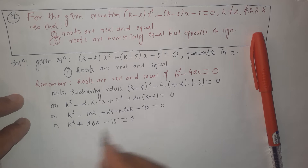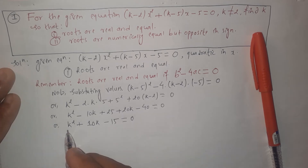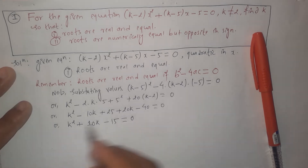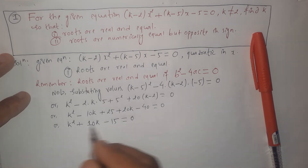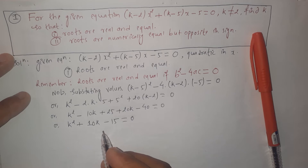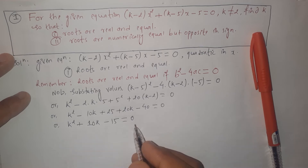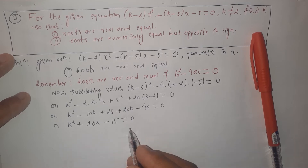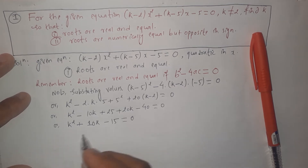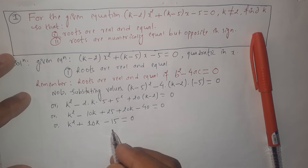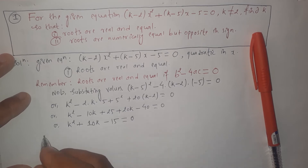There will be two values for k because the equation is quadratic in nature. We can solve this quadratic equation using any method — factorization, Poisson's law, or directly using the quadratic formula. Here I am going to solve it directly using the formula.